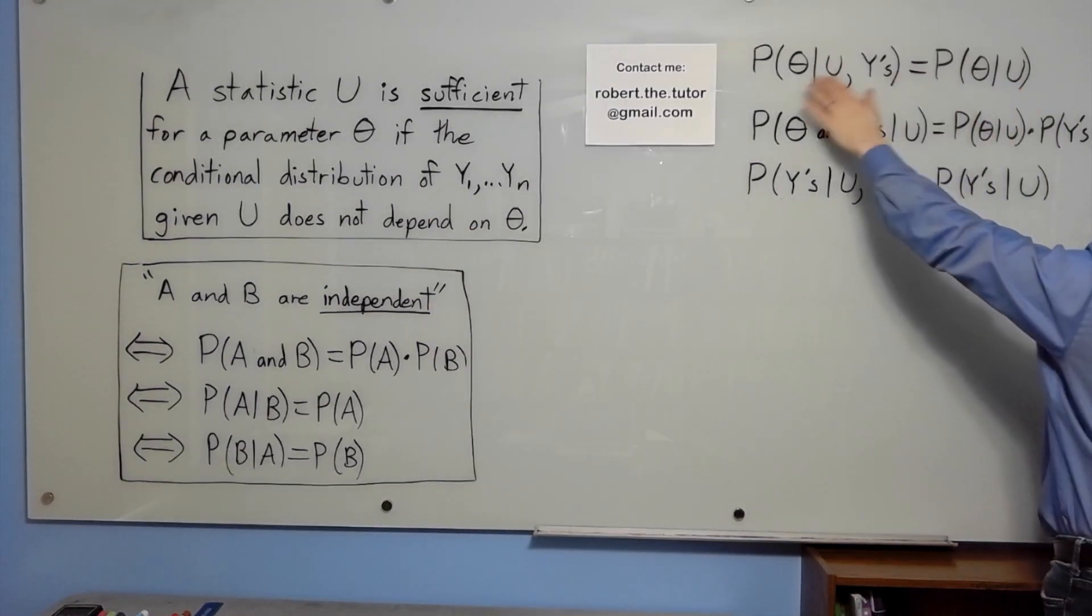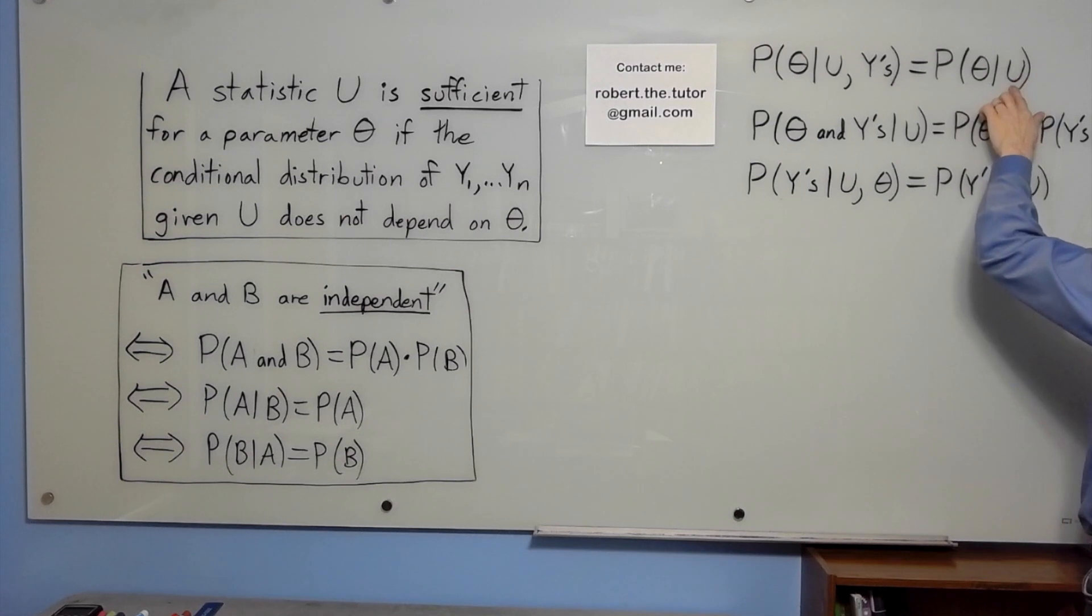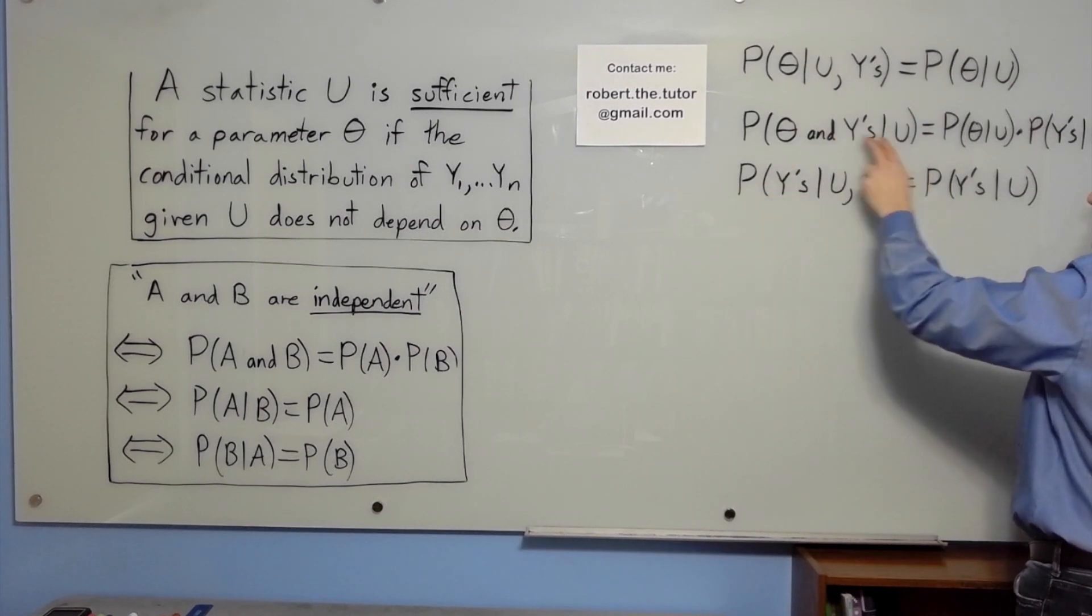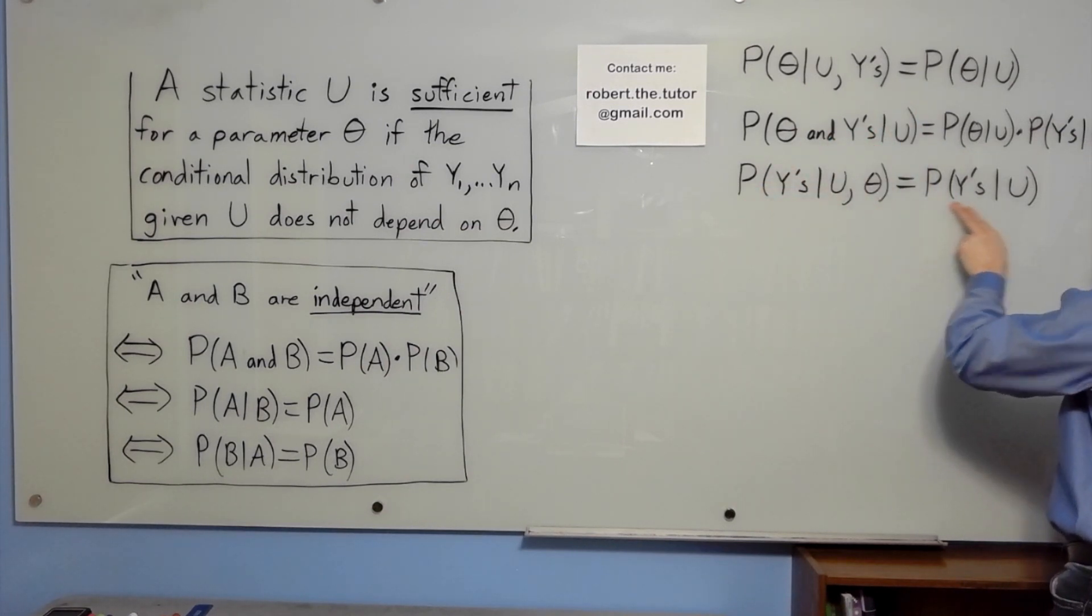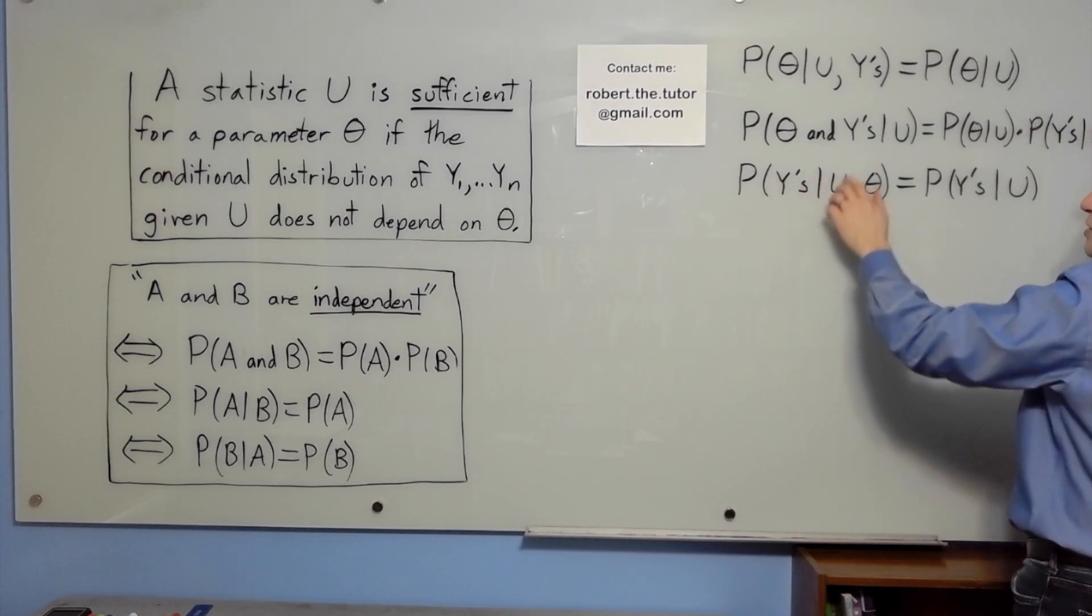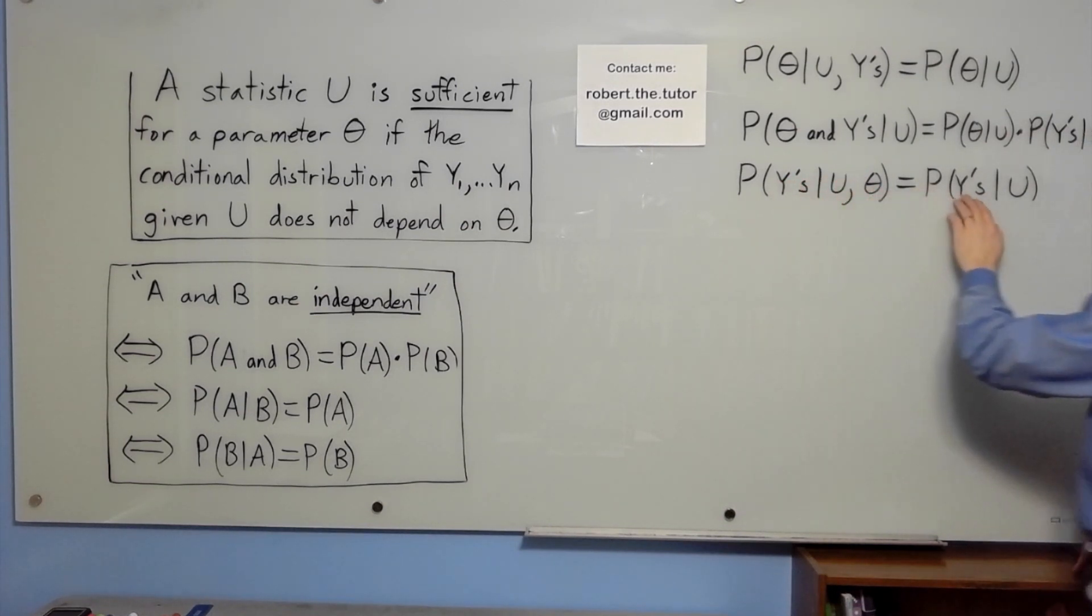This one says if you know the sufficient statistic, you don't need the data in order to predict theta. This is another version of the same thing. This is the version they use in the formal definition. The probability of the data given the sufficient statistic and theta is just the probability of the data given the sufficient statistic.